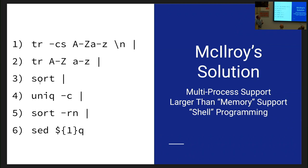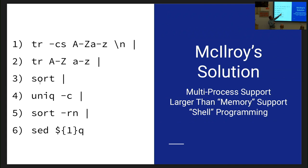Here's McElroy's solution — that's the whole thing. He actually wrote it in one line, with one extra paragraph describing each step. The first program, TR (transliterate), takes all letters that are not A through Z and converts them into newline characters, then makes uppercase letters lowercase. Sort that — putting all the words together. Then "uniq" with a dash-C switch counts how often things occur in a row. Pipe that back to sort with dash-N to sort numerically in reverse. Then "sed" gives only the top number of lines. That was his entire solution.